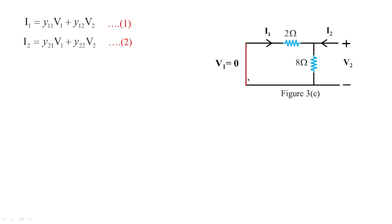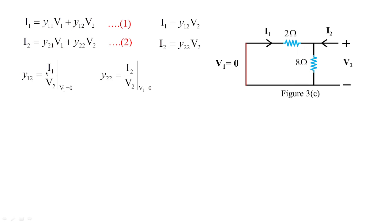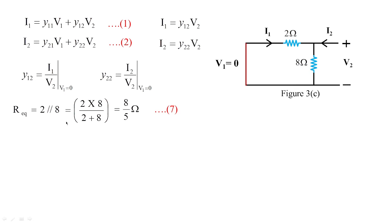Now short-circuiting the input port makes v1 = 0 and 4 ohms becomes dummy, giving the reduced circuit of figure 3c. With v1 = 0, we get i1 = y12·v2 and i2 = y22·v2. Looking from the output port, 2 ohms appears in parallel with 8 ohms, giving R_eq = 8/5 ohms (= 8·2/(8+2)).